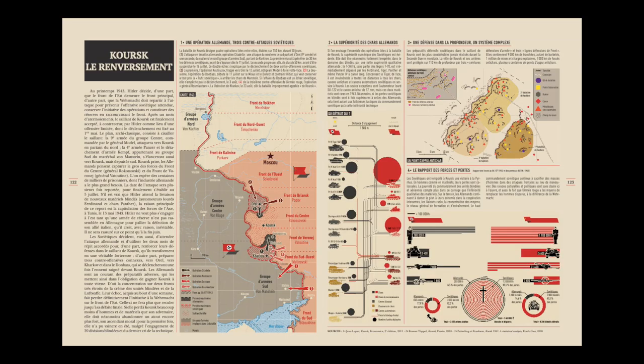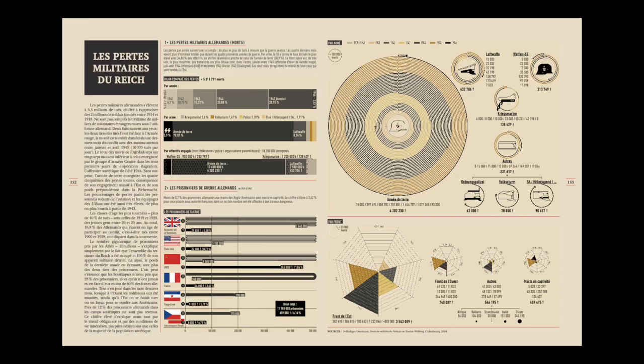Par exemple, la bataille de Koursk sur le front de l'Est, qui est une bataille de bascule — la bataille où les Allemands perdent définitivement l'initiative. On s'aperçoit que si c'est une victoire stratégique soviétique, c'est une défaite tactique, parce que leurs pertes sont 6 à 7 fois supérieures à celles des Allemands. Les Allemands ne sont pas durablement affaiblis, mais ils perdent quelque chose d'essentiel : la capacité d'agir, l'initiative. Tout ça jaillit des données.